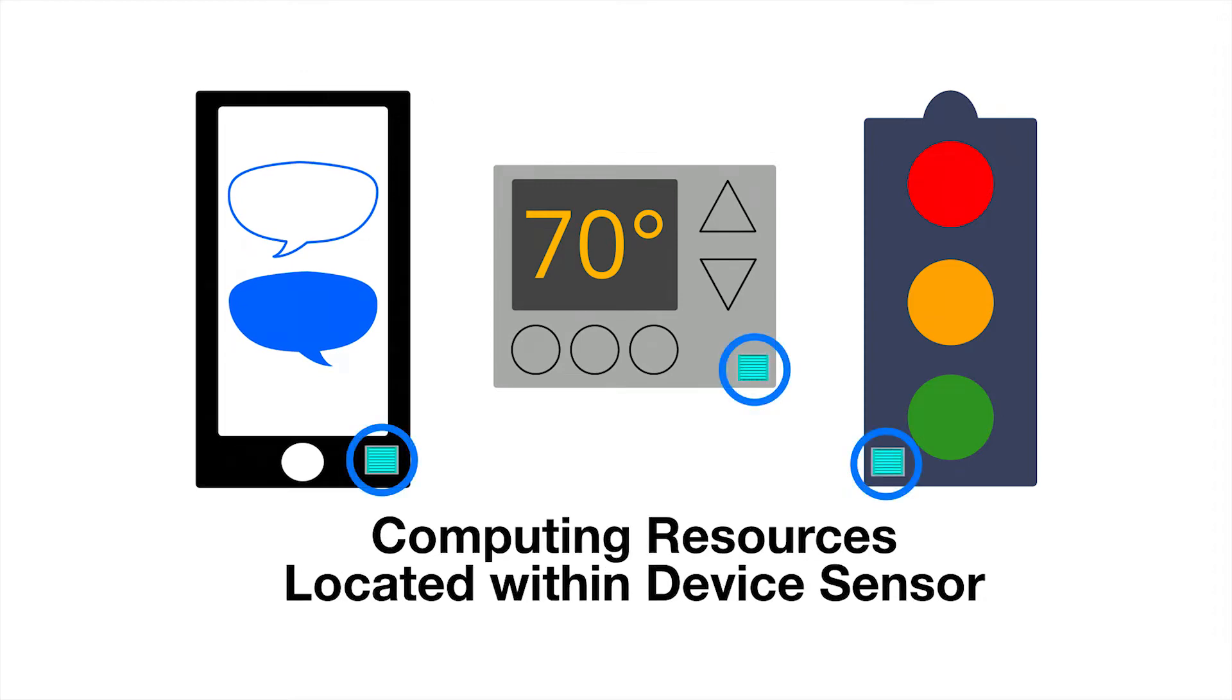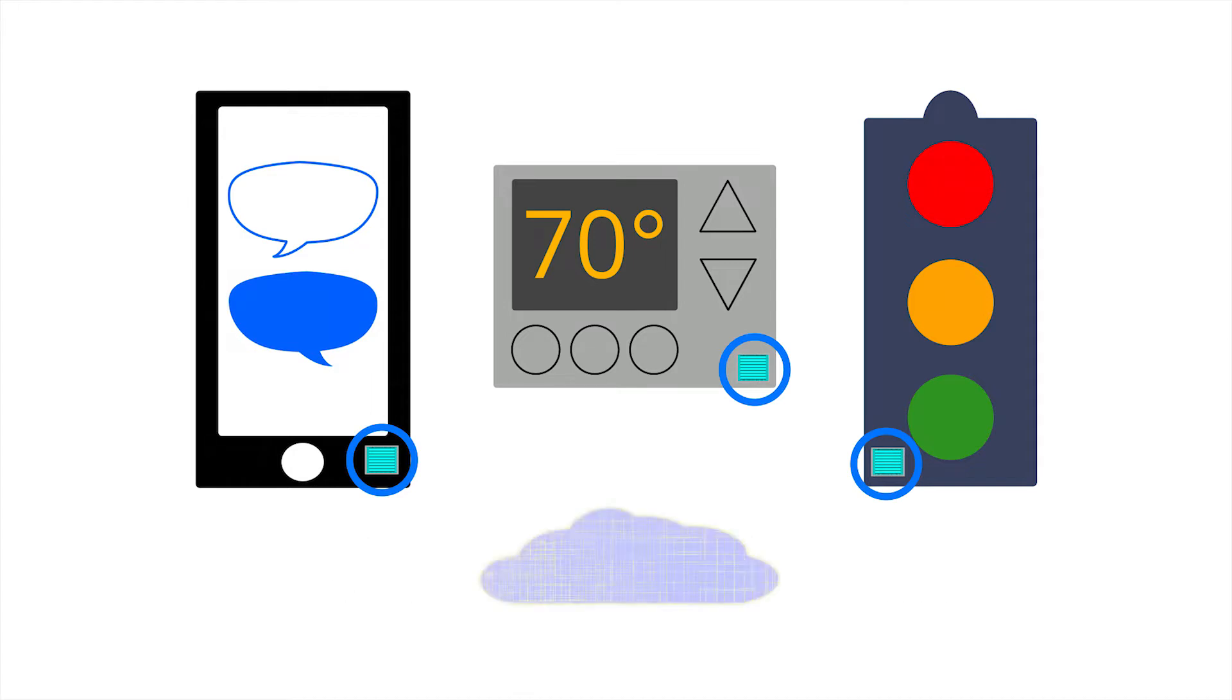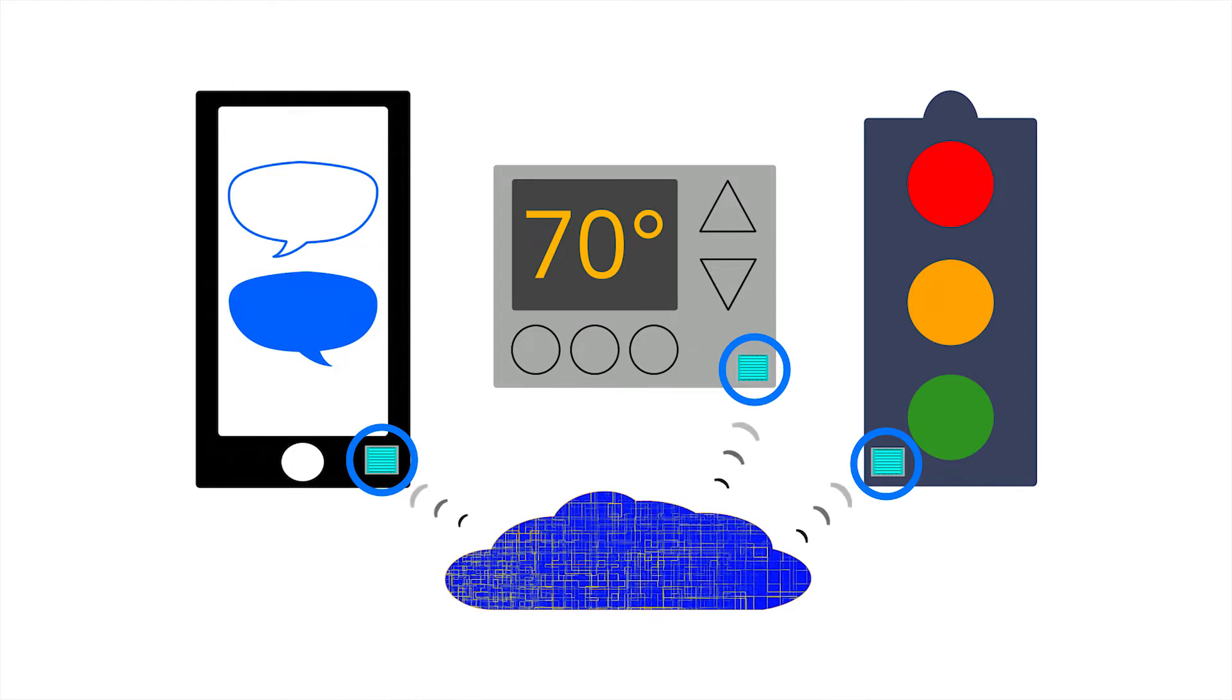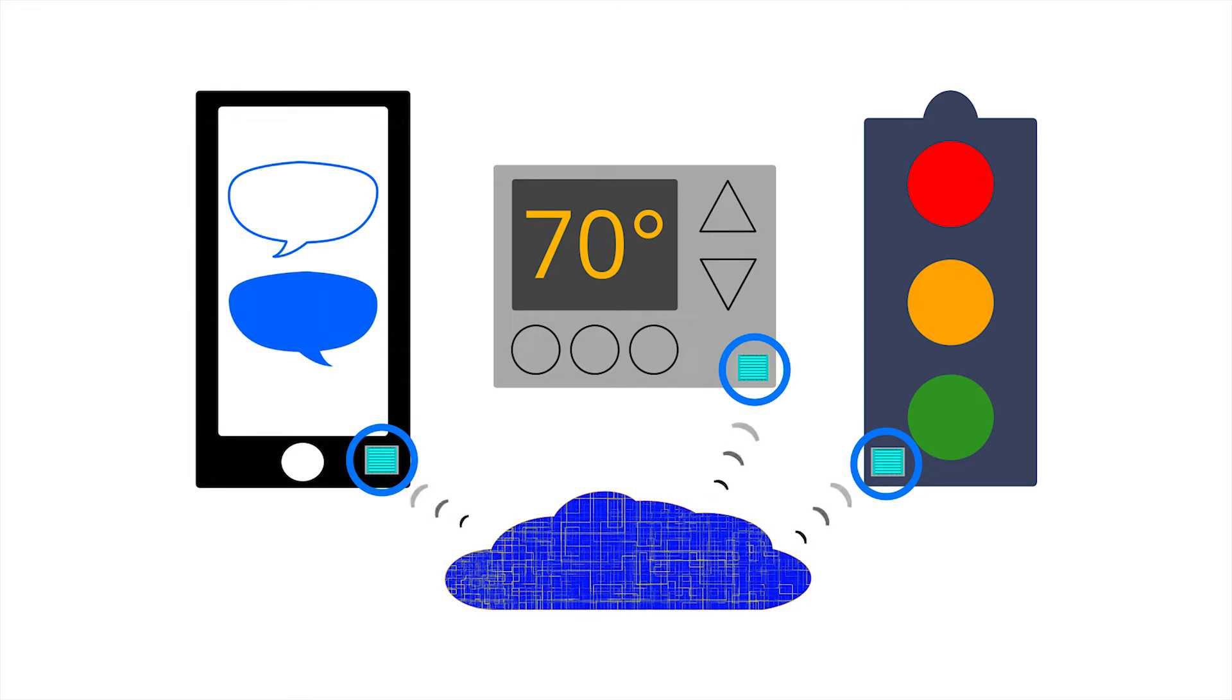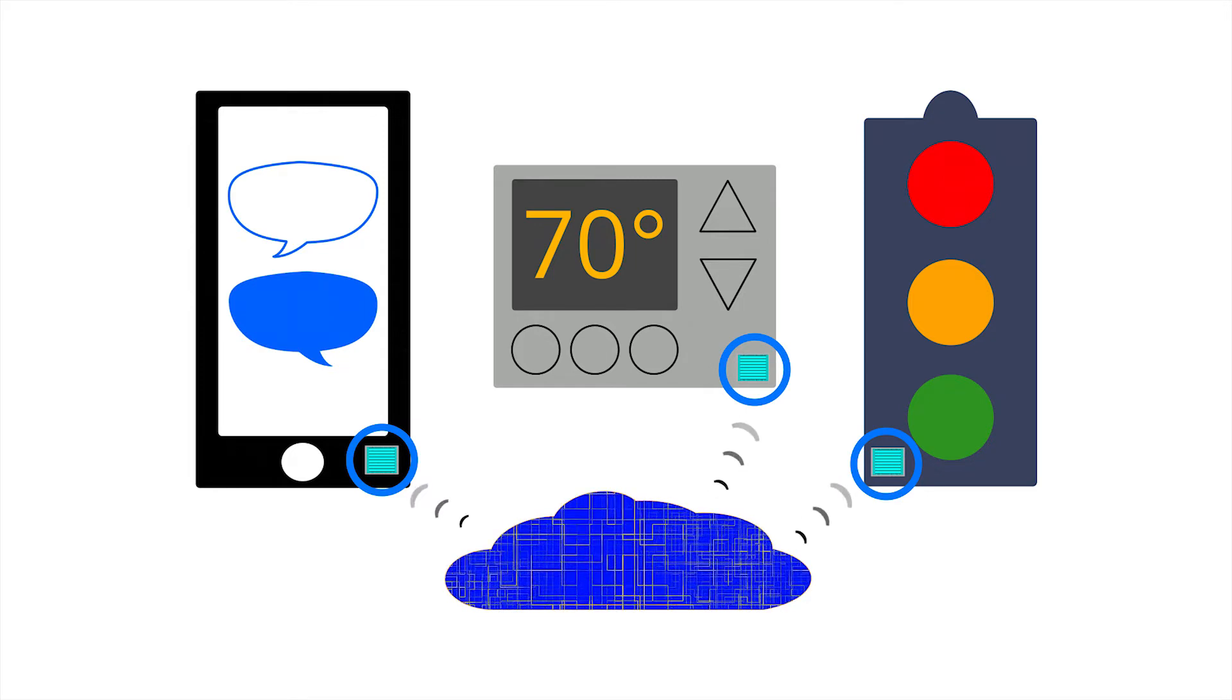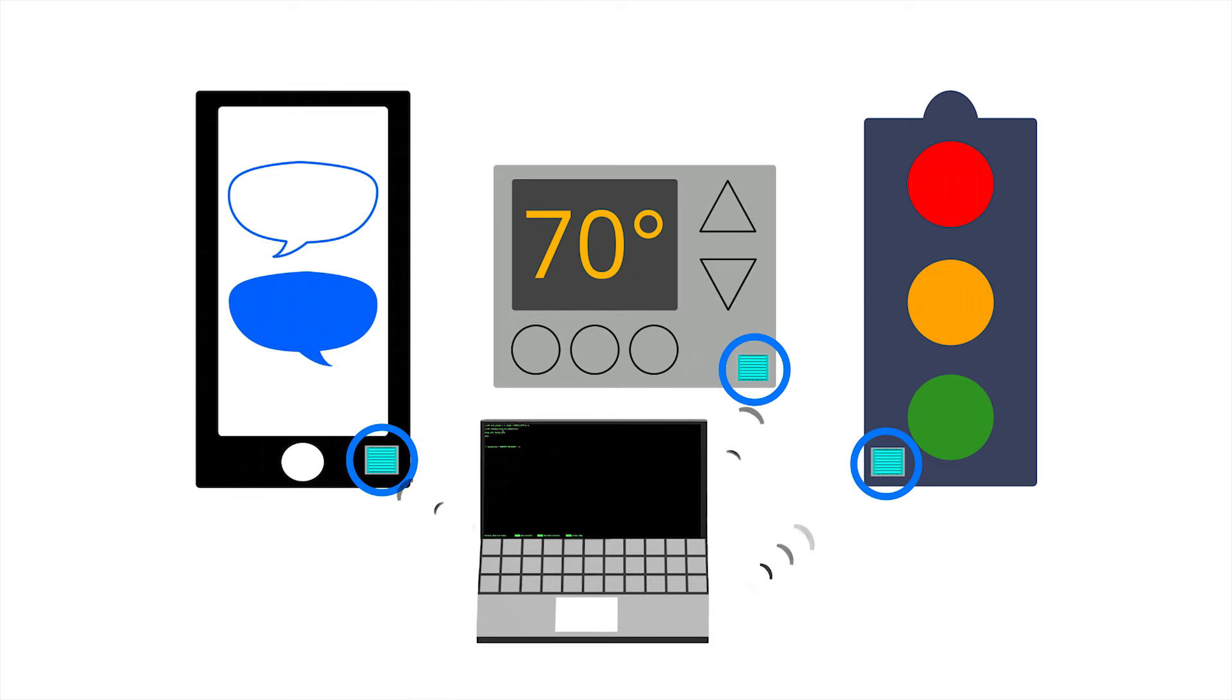The advantage of edge computing is that we don't need to spend a lot of time and energy sending sensor data from the sensor to a cloud or data center for processing. Instead, we can use that time and energy to process the data locally using machine learning inference algorithms to produce useful conclusions based on the data we've collected.